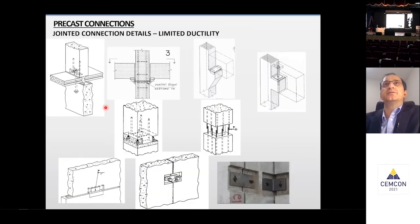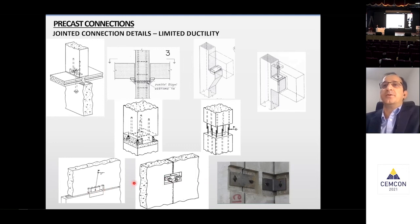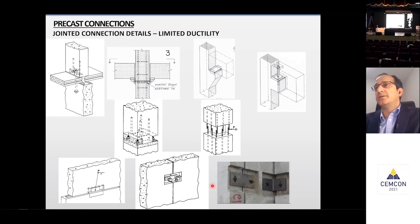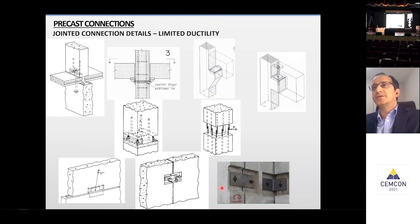Jointed connections have limited ductility — the connection is local at two or three locations in a wall panel. These are not recommended for tall buildings, but for low-rise buildings where ductility is not much of a concern, they are very efficiently used. Especially in low seismic zones, even up to 10 to 20 storeys, these type of connections have worked pretty well.